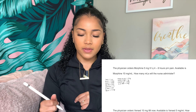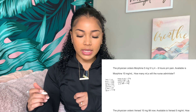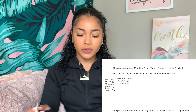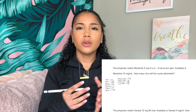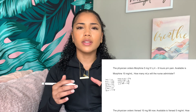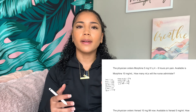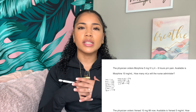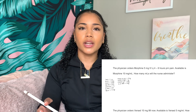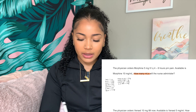First question: the physician orders morphine 5 milligrams IV every four to six hours as needed for pain. Available is morphine 10 milligrams per milliliter. How many milliliters will the nurse administer? I don't read the full question — a lot of it is filler to trip you up. You don't need to know 'every four to six hours.' I go straight to the last sentence: how many milliliters?